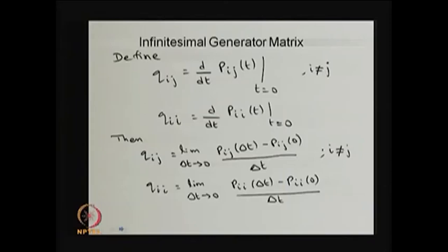I am going to define the quantity called Qij, and later this is going to form a matrix called the infinitesimal generator matrix. The definition of Qij is: take the derivative of Pij(t) with respect to t and substitute t equal to 0, for all i not equal to j. The diagonal element Qii is defined separately because it is different from all other elements.